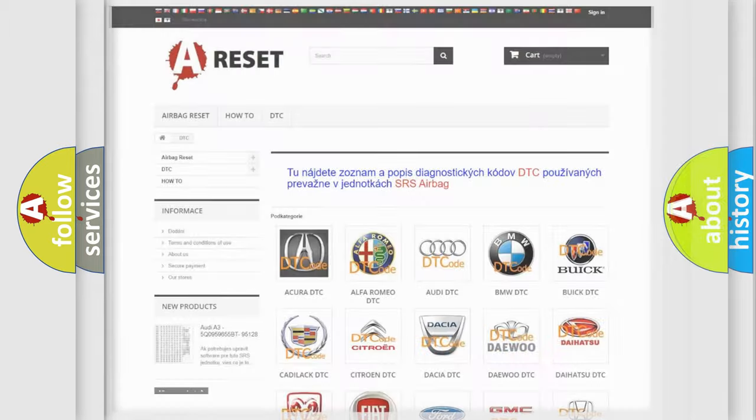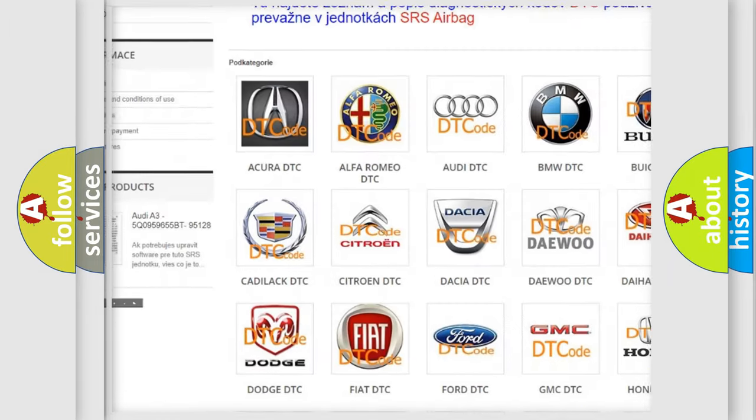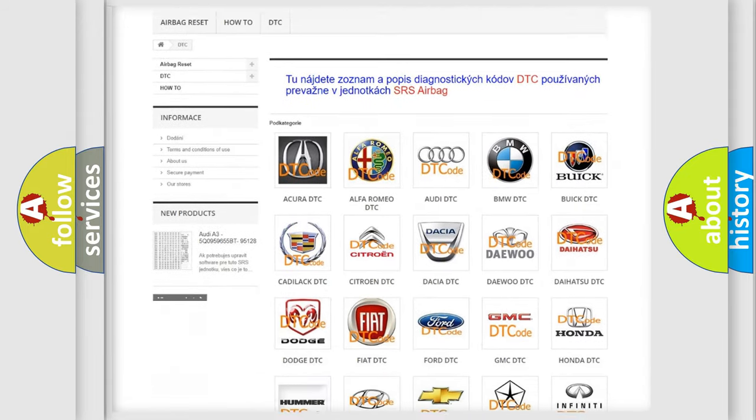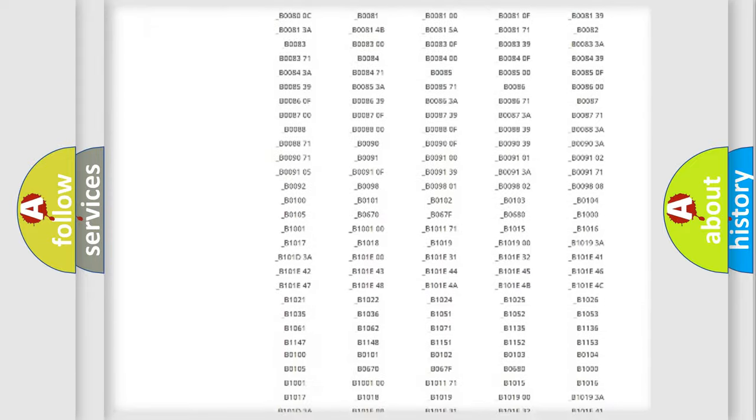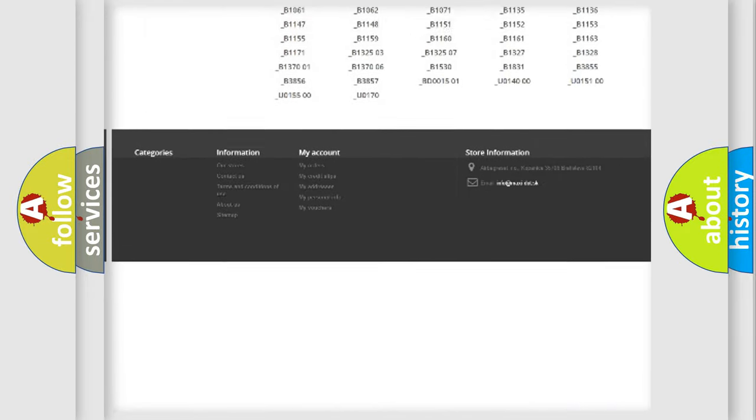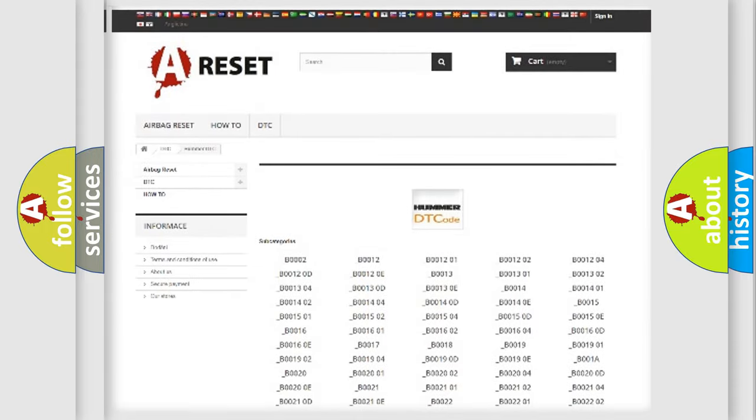Our website airbagreset.sk produces useful videos for you. You do not have to go through the OBD2 protocol anymore to know how to troubleshoot any car breakdown. You will find all the diagnostic codes that can be diagnosed in Hummer vehicles, and also many other useful things.